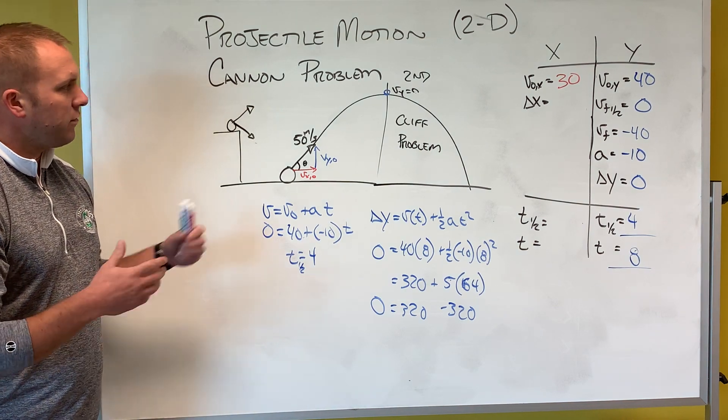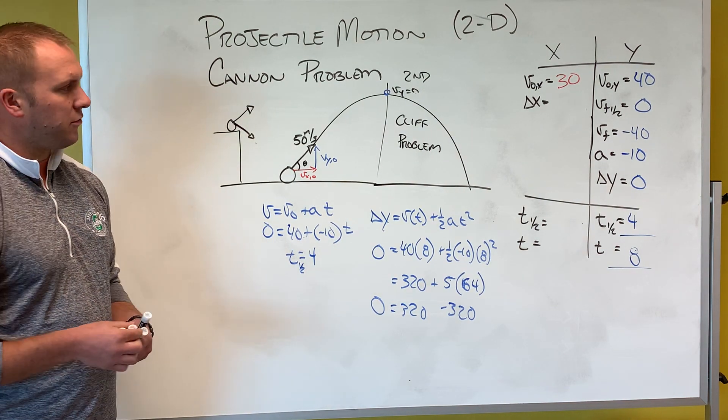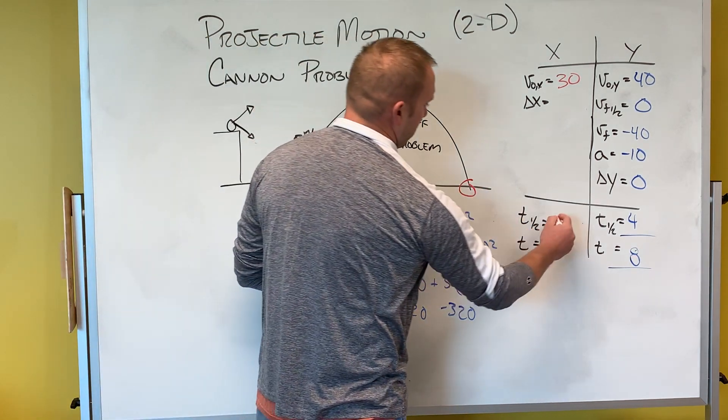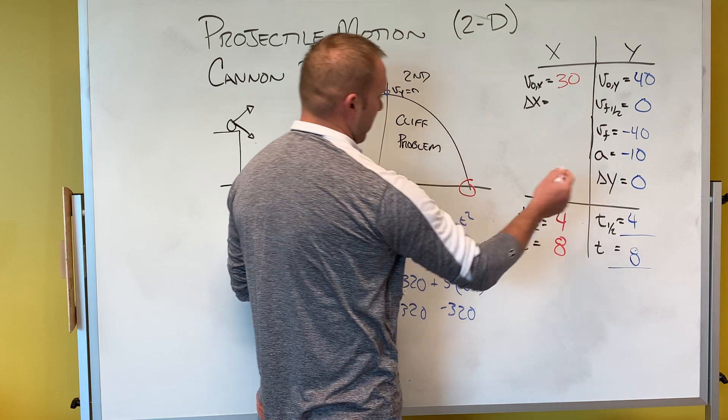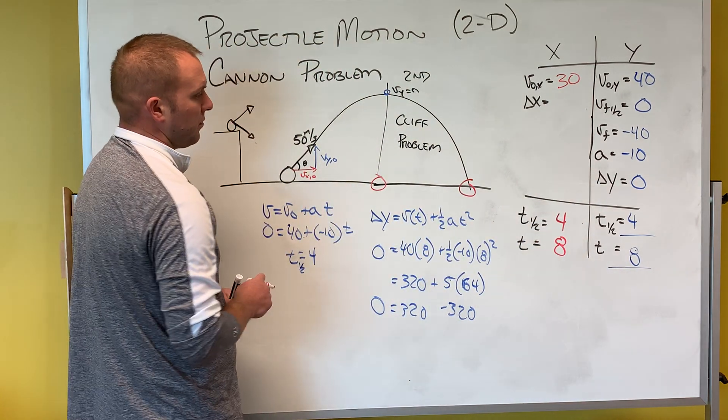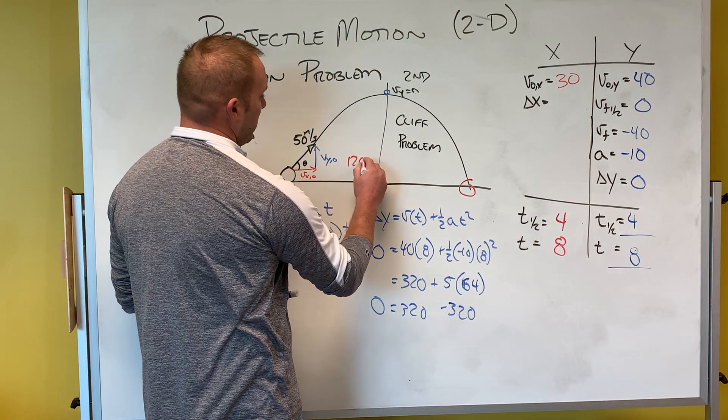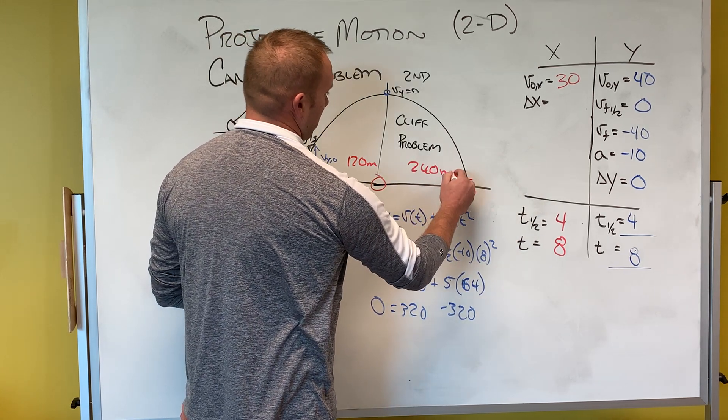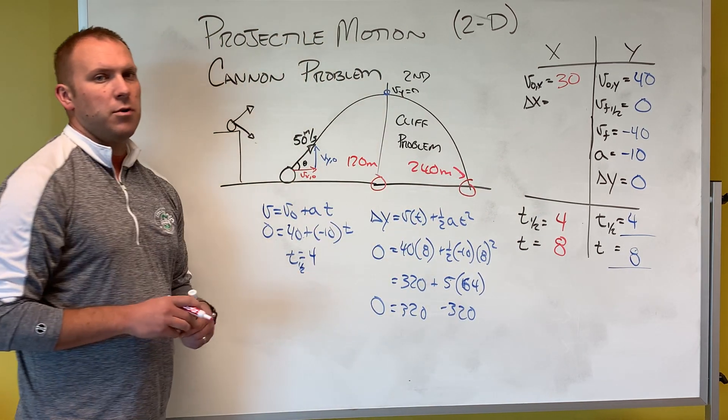Once I know either of those times, it's pretty straightforward that I can know how far is it here, how far is it here. If that's four seconds and that's eight seconds, half of my displacement would be 120 meters. This would be 240 meters right there, and we can work through the problem there.